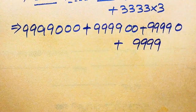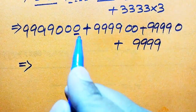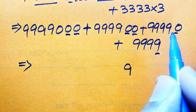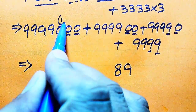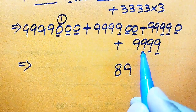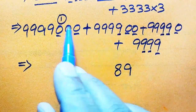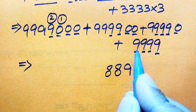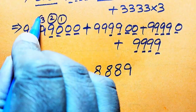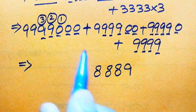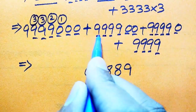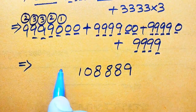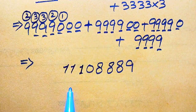In the last step, we sum up all of these values. Zero plus zero plus zero plus zero plus nine gives nine. Zero plus zero plus nine plus nine gives 18 — write 8, carry 1. Zero plus nine plus nine plus nine gives 27, plus 1 is 28 — write 8, carry 2. Nine plus nine plus nine plus nine gives 36, plus 2 is 38 — write 8, carry 3. Nine plus nine plus nine gives 27, plus 3 is 30 — write 0, carry 3. Nine plus nine gives 18, plus 3 is 21 — write 1, carry 2. Finally nine plus two gives 11.